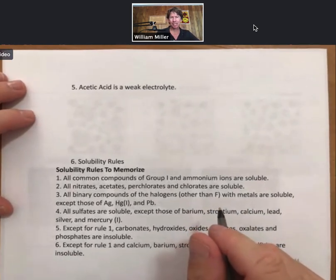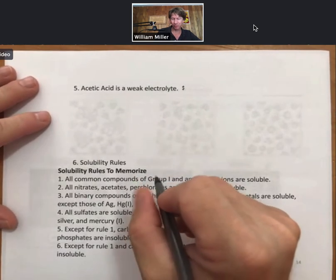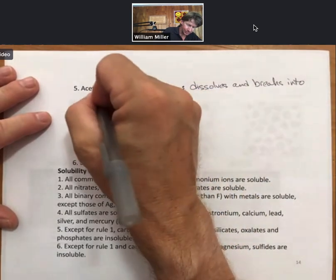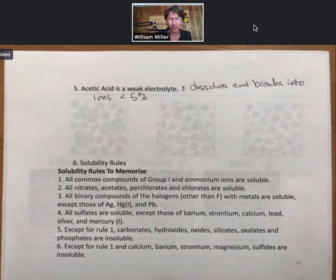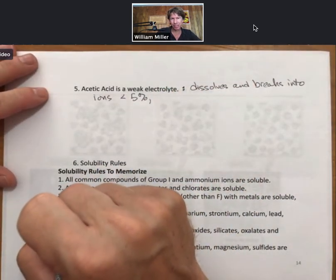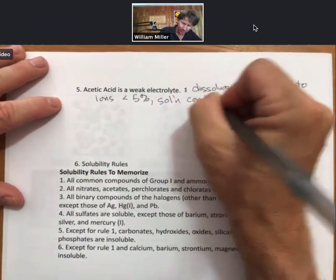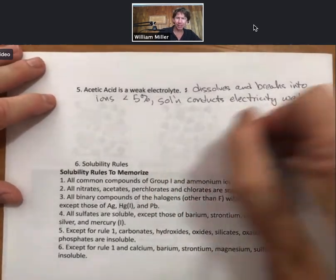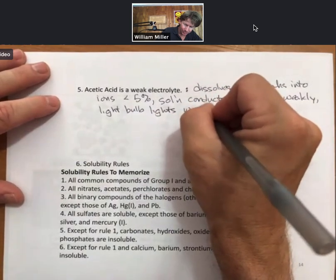Now let's talk about weak electrolytes. Acetic acid is a weak electrolyte. Less than five percent — could be as low as 0.1 percent — dissolves and breaks into ions. The solution conducts electricity a little bit. There are enough ions that the solution conducts electricity weakly, and the light bulb lights weakly — meaning dimly.